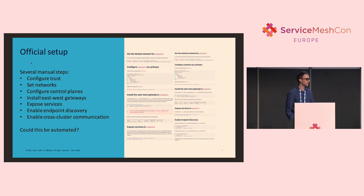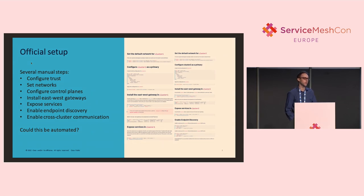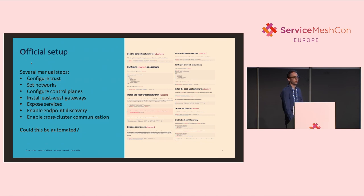If you need to do this once, that might be fun, but if you need to do this a couple of times, it can be pretty cumbersome. Also, even after you have all this setup specific to the multi-primary topology, you should have the Istio configurations synchronized between the clusters. There is no out-of-the-box support for that in Istio today. Could all this be better? Could we automate this somehow for our users?